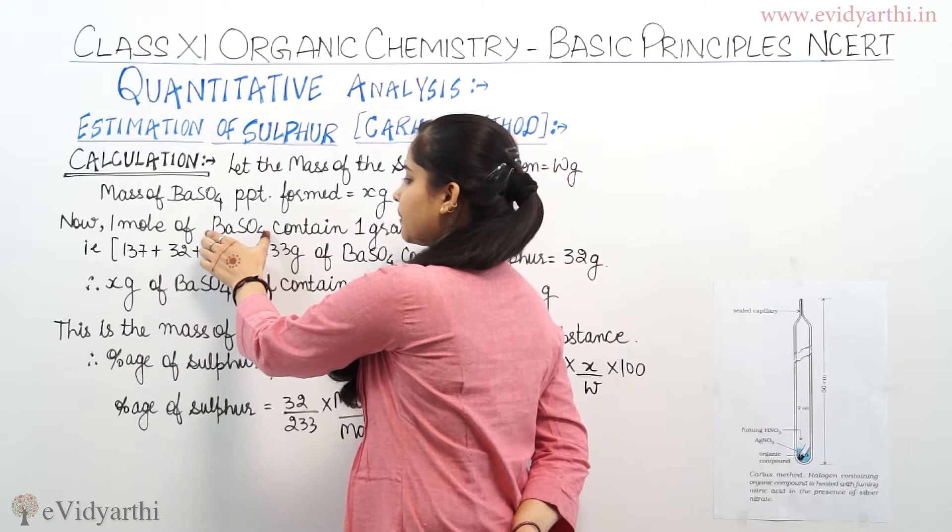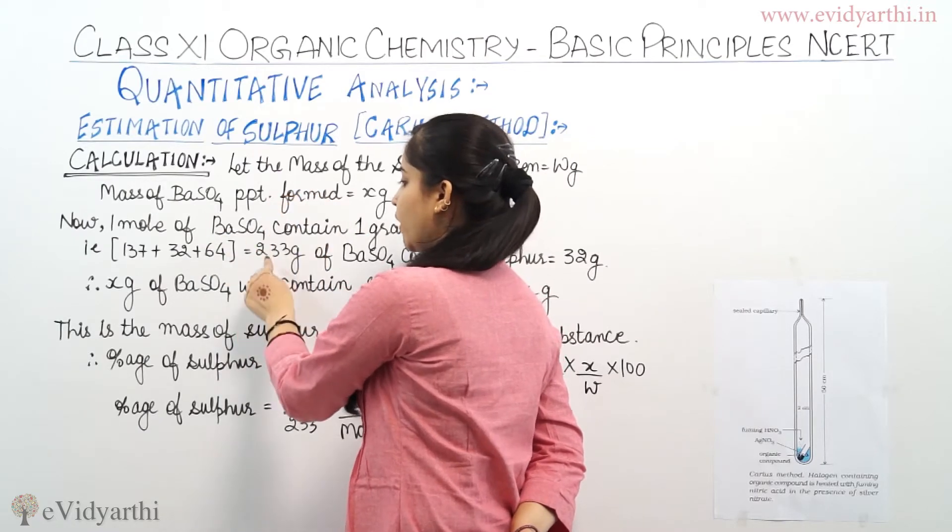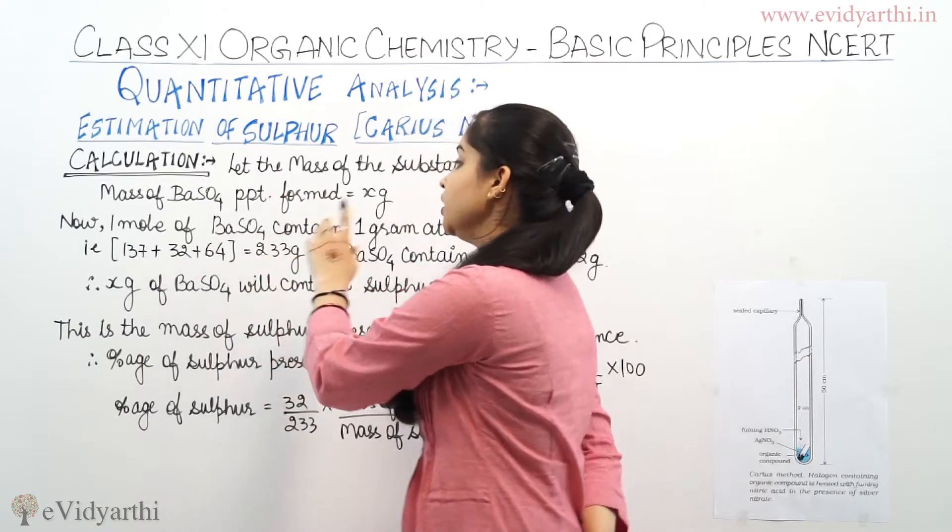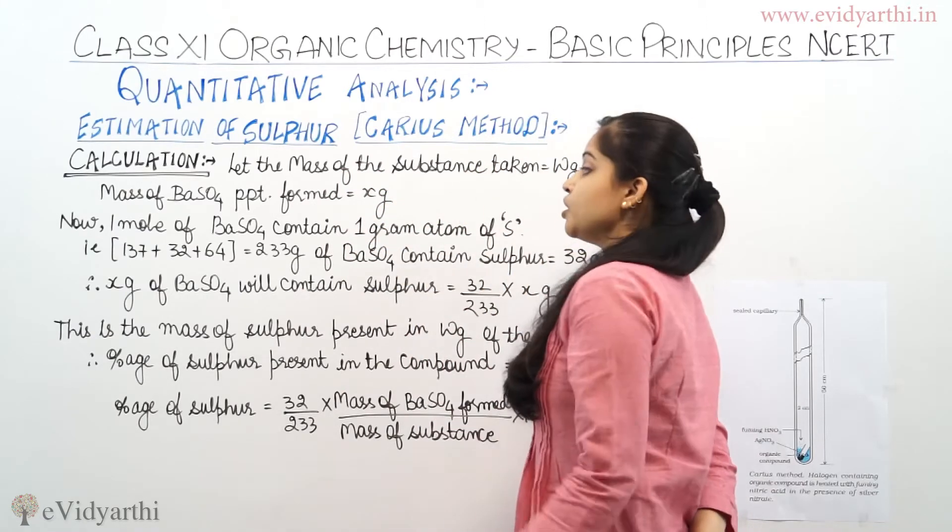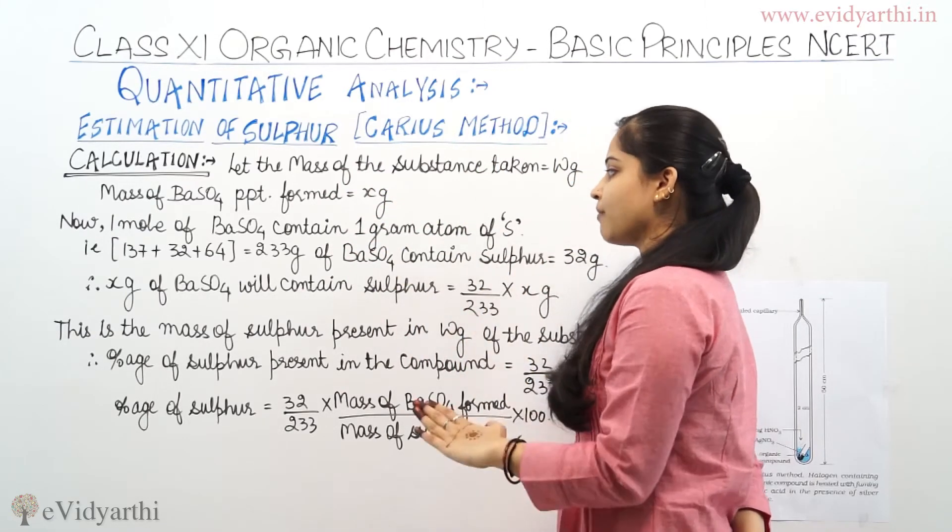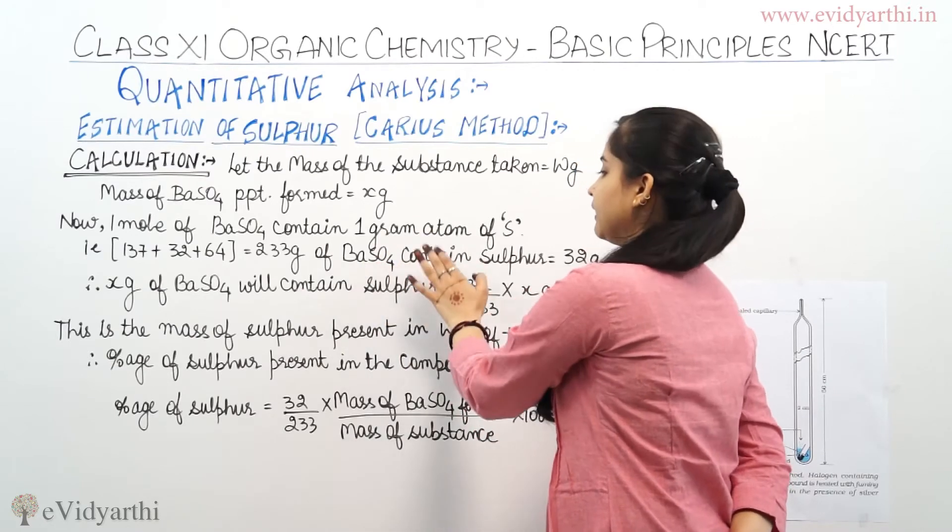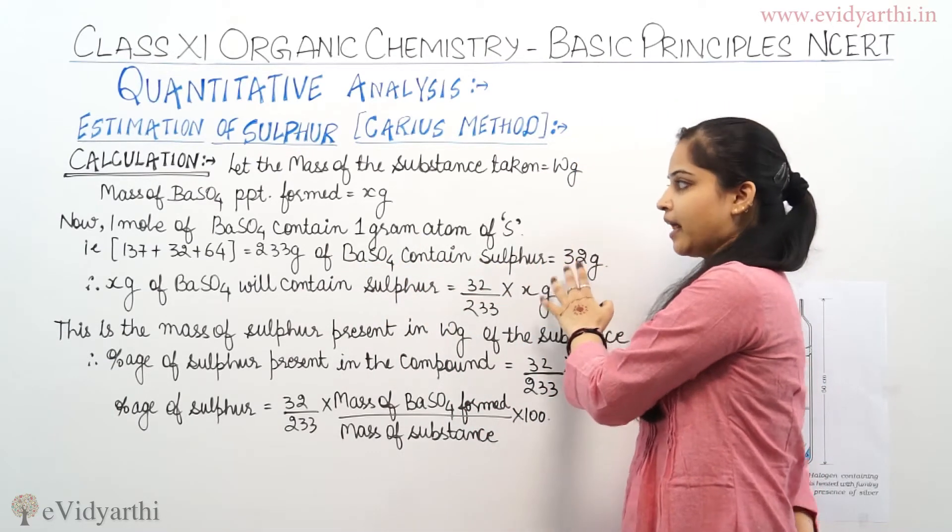If I am using the molecular mass of BaSO4, it is 233 grams. So 233 grams of BaSO4 contains sulfur equal to 32 grams.